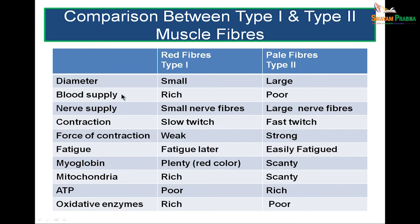Comparing red type one fibers to pale type two fibers: type one has smaller diameter and rich blood supply, while type two has larger diameter and poor blood supply. Type one has smaller nerve fibers; type two has larger nerve fibers. Type one are slow twitch with weak forces of contraction; type two are fast twitch with strong forces. Type one fibers fatigue later, whereas type two fatigue more easily. Skeletal muscle is voluntary while the other two types are involuntary.